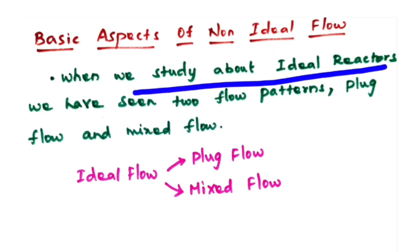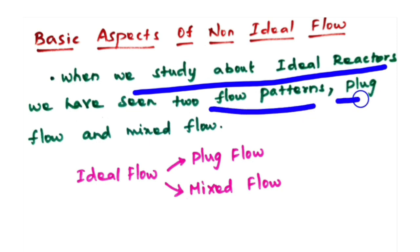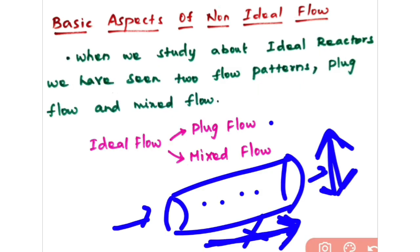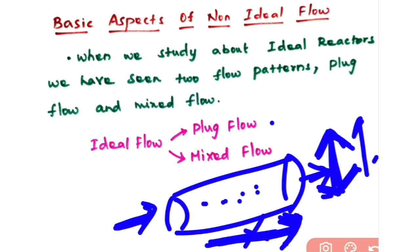When we study about ideal reactors such as plug flow reactor, batch reactor, and continuous stirred tank reactor, we have seen two flow patterns: plug flow and mixed flow. In a plug flow reactor, reactant enters at one end and product material is withdrawn at the other end. There is only lateral mixing in the direction of the y-axis and no mixing along the length of the tube, that is in the x-axis direction. So there is no axial mixing. This flow is known as plug flow.